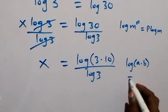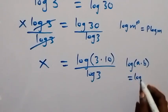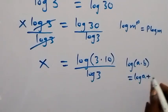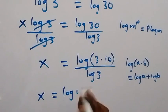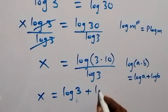here this is the same thing as log a plus log b. So it is separated into addition of two logs. So here we now become x equals to log 3 plus log 10, then all over log 3.